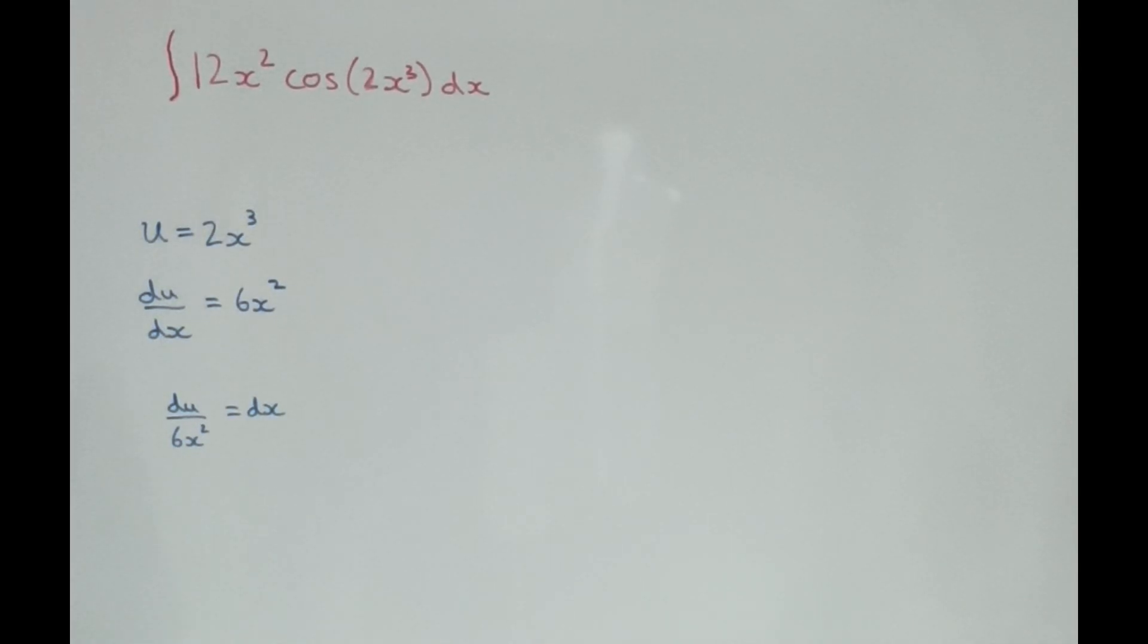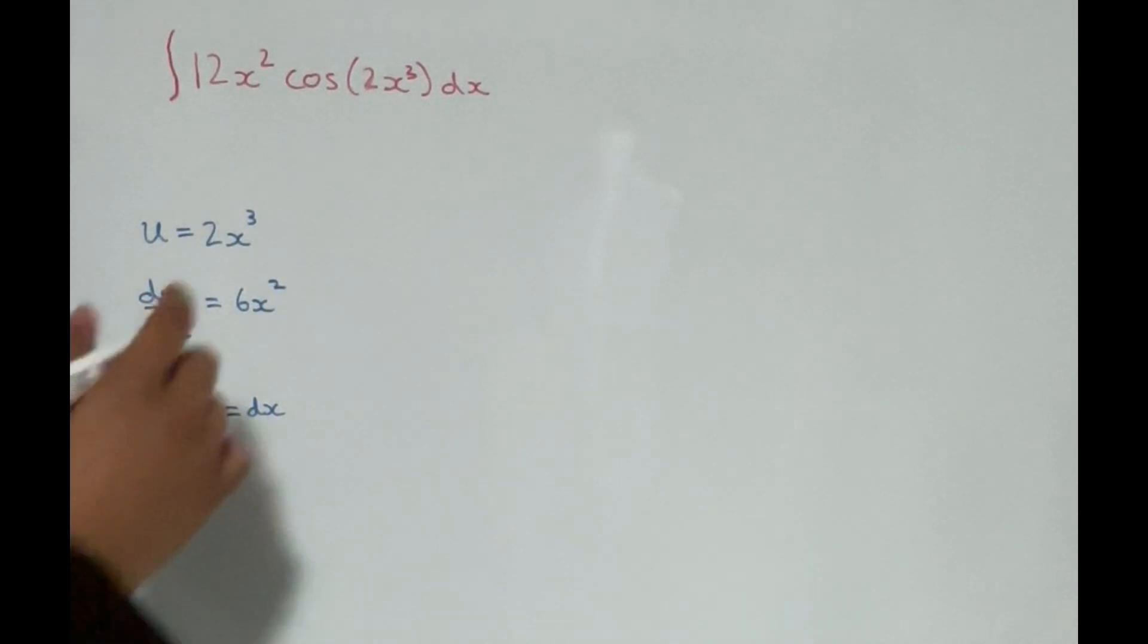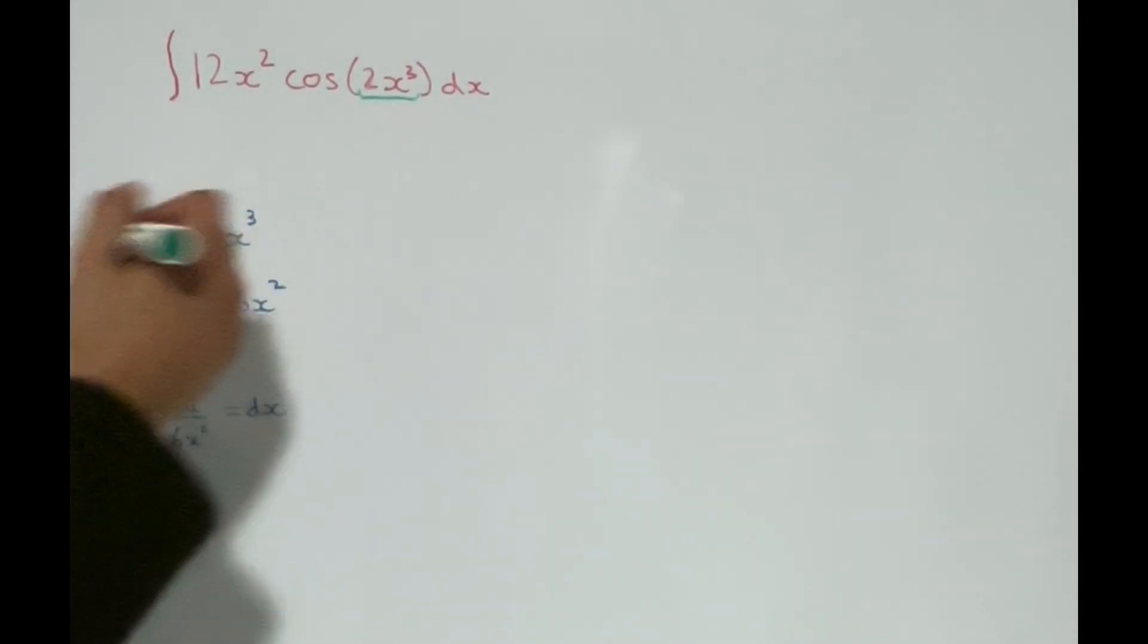Integrate 12x squared cos 2x cubed dx. Now we're going to integrate this using u-substitution, so let's let 2x cubed equal u.